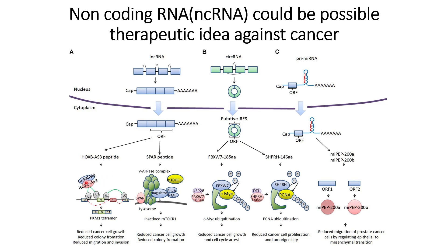The function of the HOXB-AS3 peptide is that it interacts with hnRNPA1 and helps to prevent the cleavage of the PKM1 tetramer. In cancer cells, hnRNPA1 cleaves this PKM1 tetramer, preventing it from acting against cancer cell growth. However, when the long non-coding RNA is transcribed, it forms the HOXB-AS3 peptide, which forms a complex with hnRNPA1 that prevents the cleavage of the PKM1 tetramer.